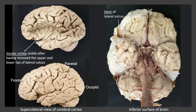The lateral sulcus has a main stem on the inferior surface of the brain, which splits up into three different rami on the supralateral surface of the brain. And if you remove the upper and lower lips of the lateral sulcus and stretch them apart, then deeper to that sulcus we can see the insular cortex lying there.